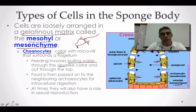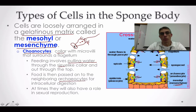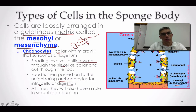Once that food is collected, it's going to be passed down to an archaeocyte. The archaeocyte is going to be an amoeboid type of cell, which means it can actually move from place to place within the sponge. Once that food reaches the archaeocyte, it's going to be digested. In this case, it's going to perform what we call intracellular digestion, which means digestion within the cell.